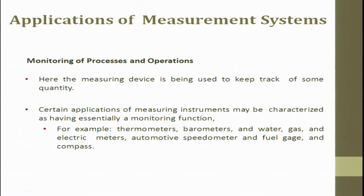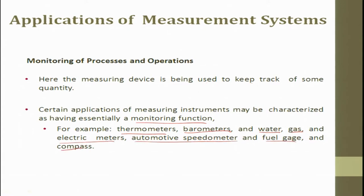What is monitoring of a process and operation? Here the measuring device is used to keep track of some quantities - for example, you keep on monitoring the temperature, the rainfall, the humidity. Certain applications of the measuring instrument may be characterized as having essentially a monitoring function. It can be temperature, barometer pressure, water, gas, electric meter, automotive speedometer and fuel gauge, and compass. All these things are used for monitoring the process and operation.